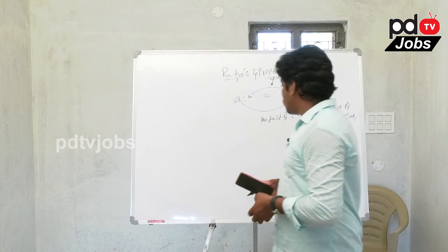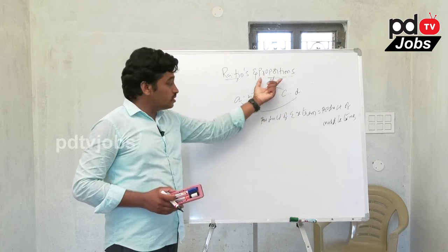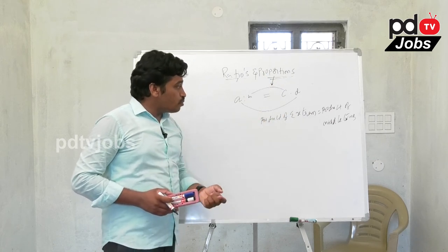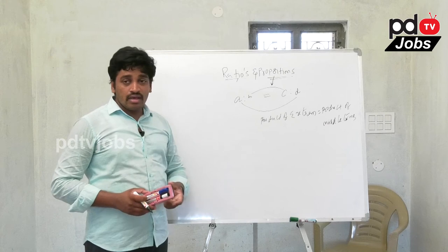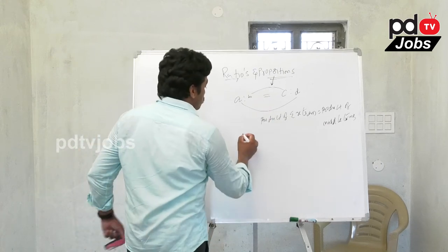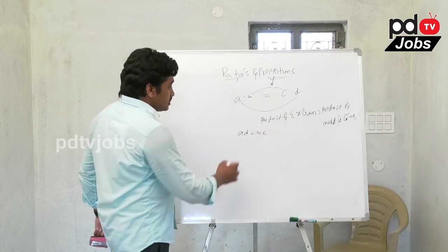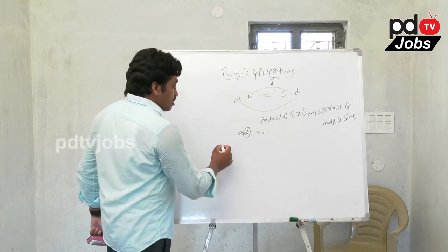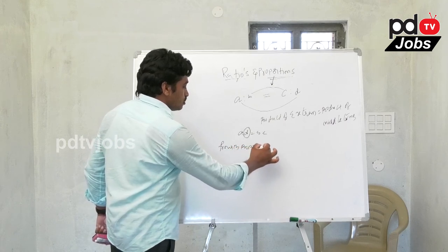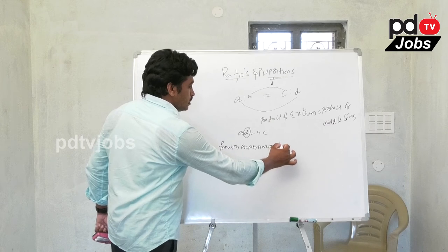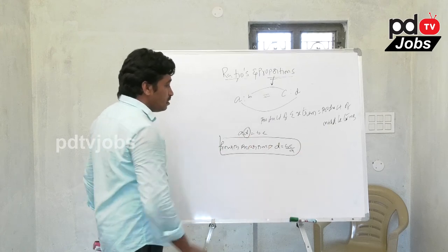The proportionality rule states that the product of extremes equals the product of middle terms. For A:B = C:D, we get A × D = B × C. Here, D is called the fourth proportion. The formula for fourth proportion is D = BC/A.